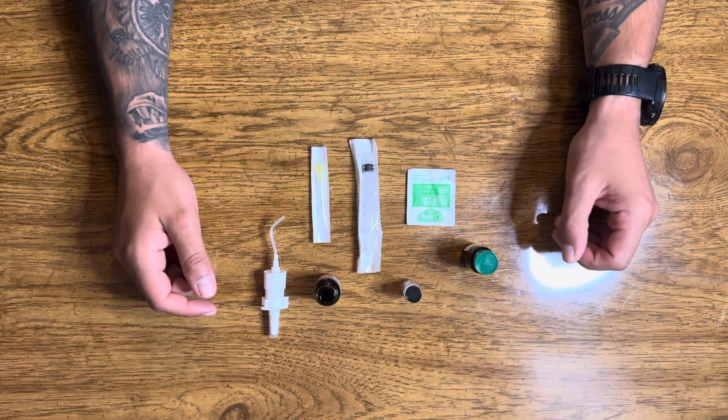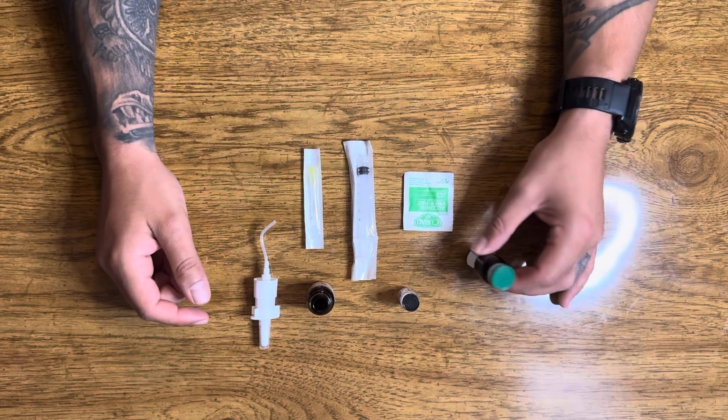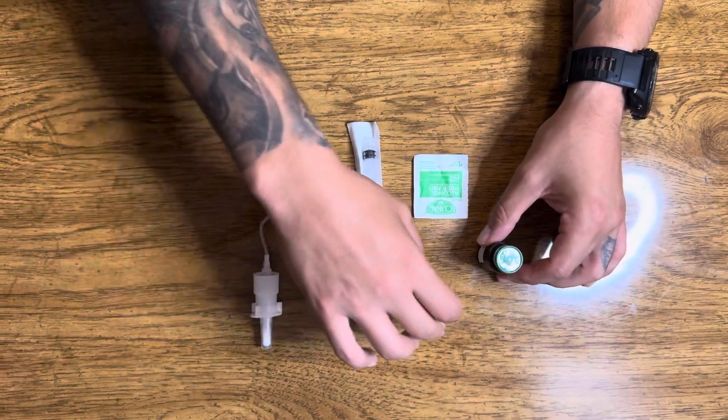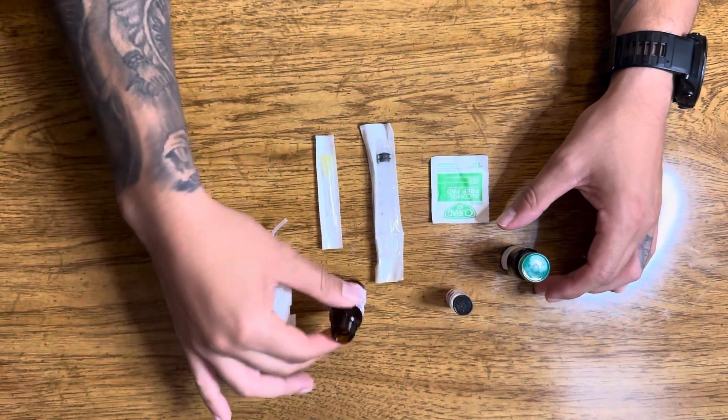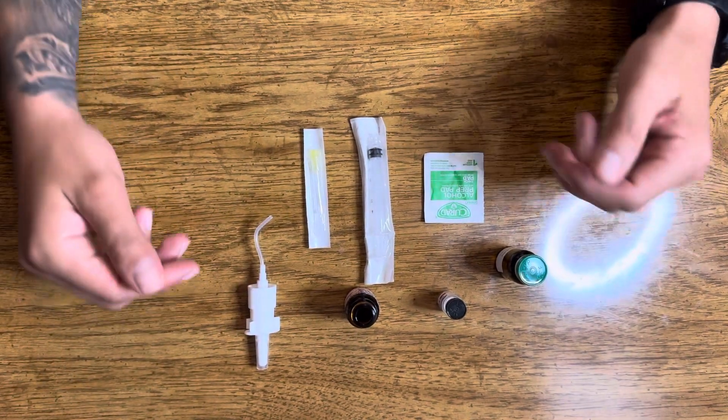Okay, so today we're talking about how to reconstitute nasal spray peptides. When you buy a kit with us, you're going to get your water, your peptide, and your nasal spray container, alcohol pad to clean everything off, and your mixing needle.